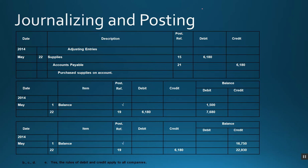The transaction is: we purchased supplies on account — we did not use cash. So the two accounts impacted are supplies and accounts payable, which I abbreviate as AP. Supplies are increasing in my business and so is my debt. Supplies is an asset account and increases on the debit side. Accounts payable is a liability account and increases on the credit side. We record this in our journal: list the account being debited first — supplies — then indent and list accounts payable. We put in the amounts in the correct debit and credit columns.